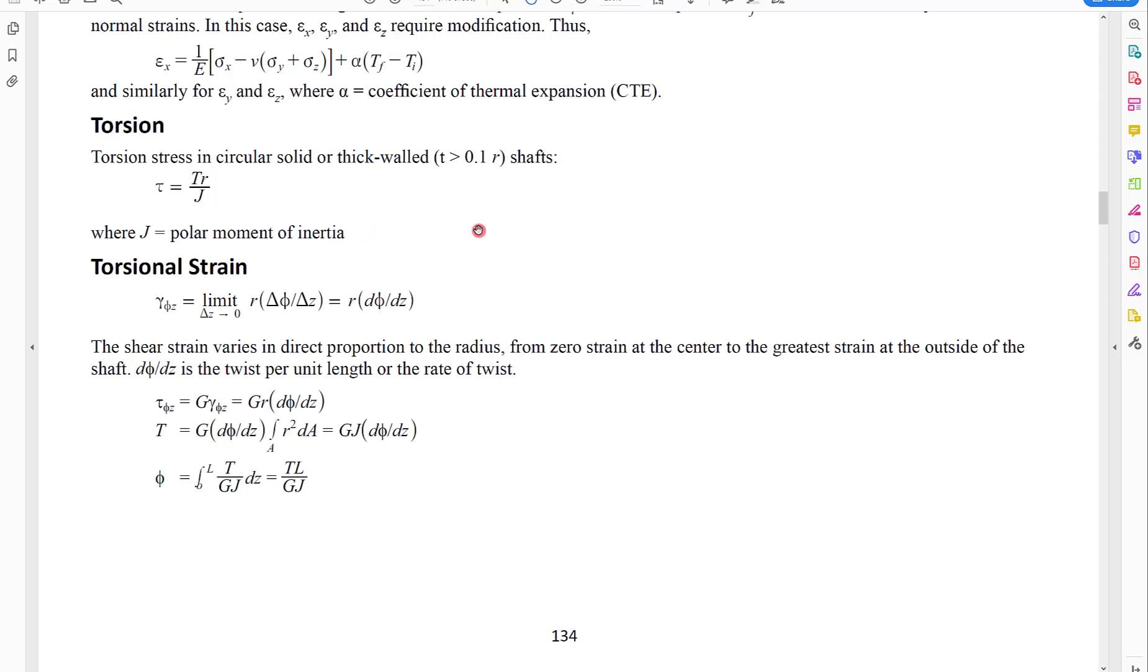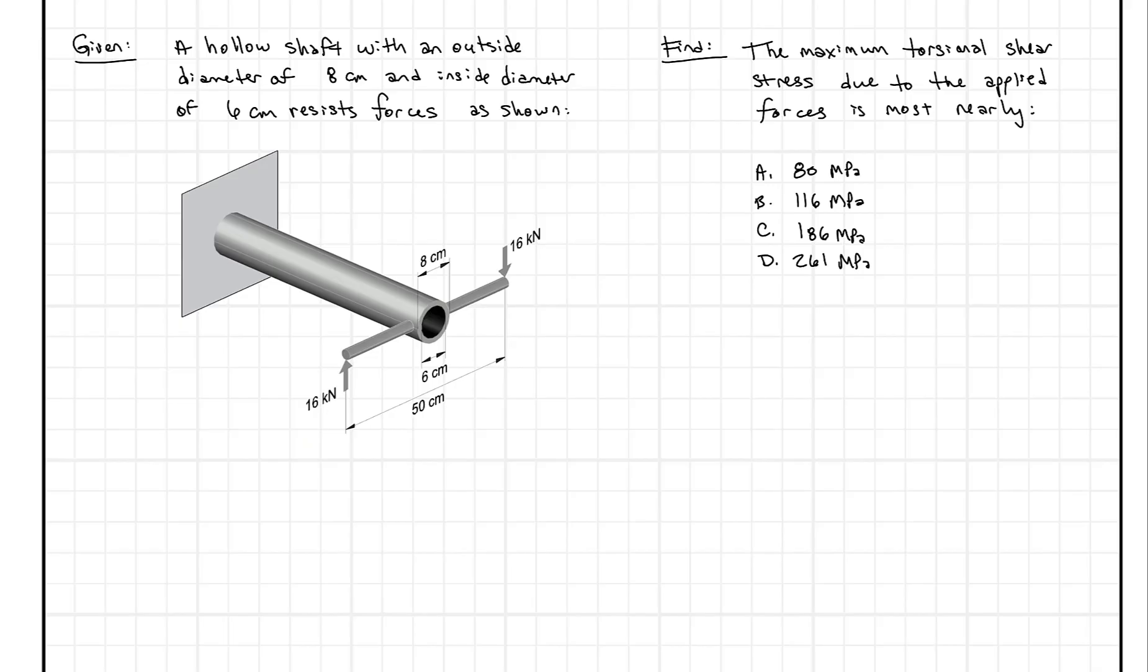But unfortunately, they don't give you what J is here. So we have to go look that up as well. So let's go back, and first we'll write down our formula. So the formula that we just found was tau equals TR over J. And sometimes you'll see this as TC over J, where C is just the distance from the center of the shaft to the point where you want the torsional shear stress. Typically, you want this to equal R, because that's going to give you your maximum torsional shear stress.